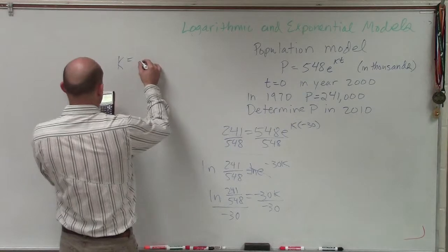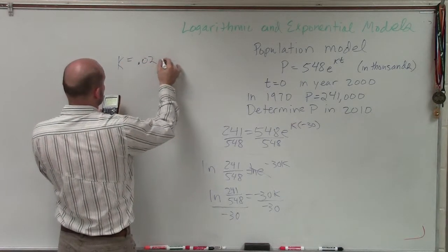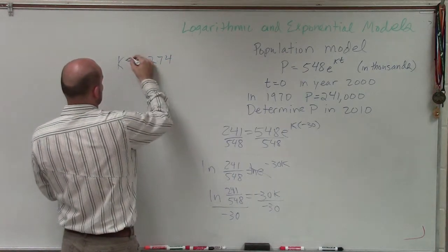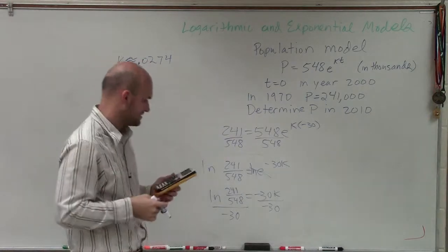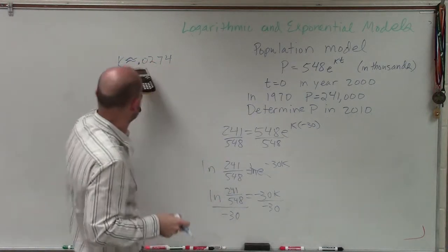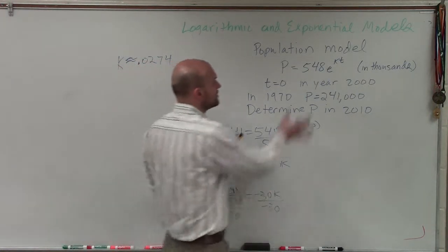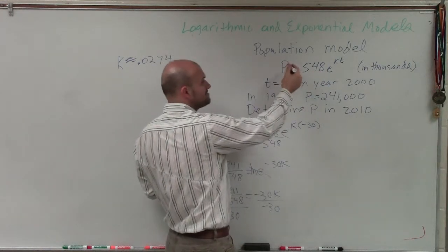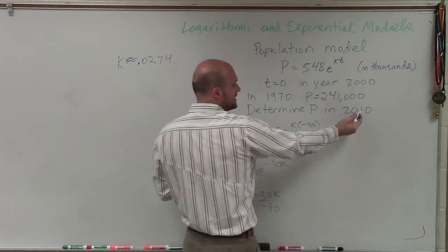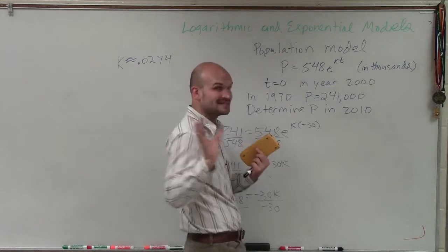And what I get is k is approximately 0.0274, and I'm going to round that. So I know my k is that value. Now, I want to determine what is the final population. What is my P in 2010? So that means my t is going to be 10 years.